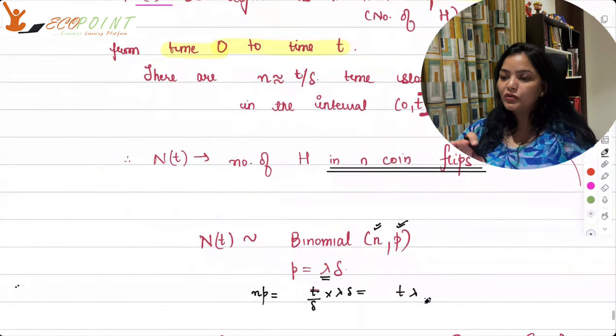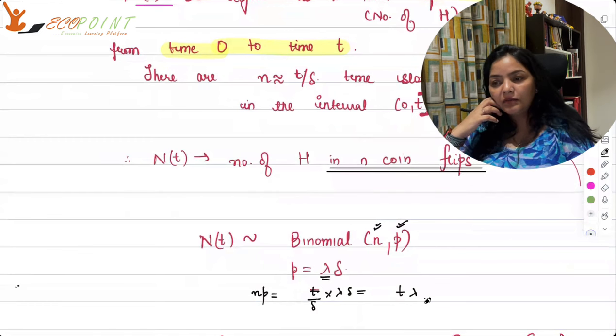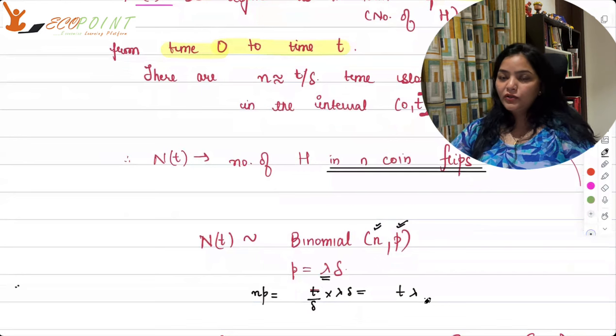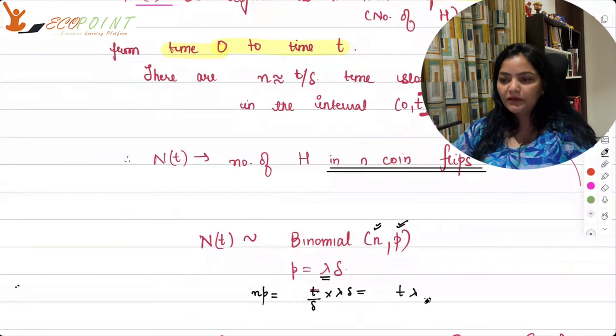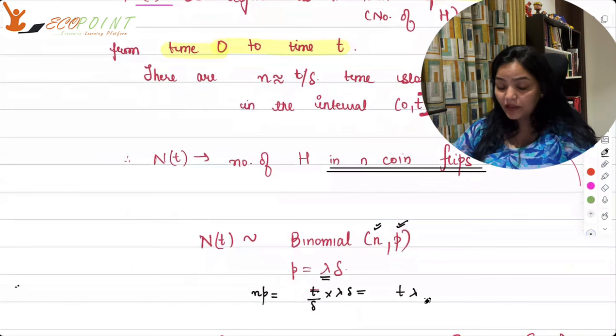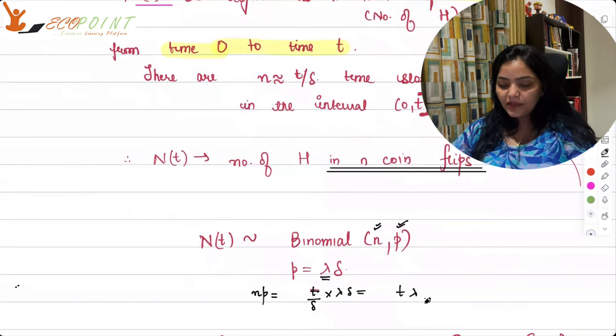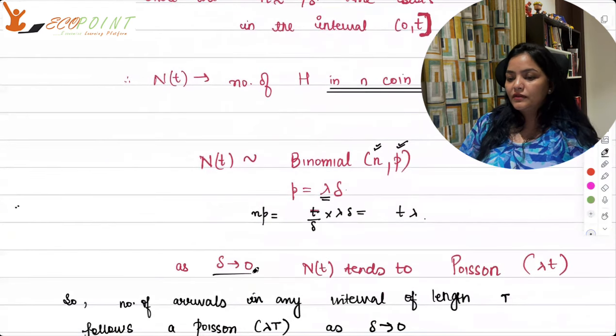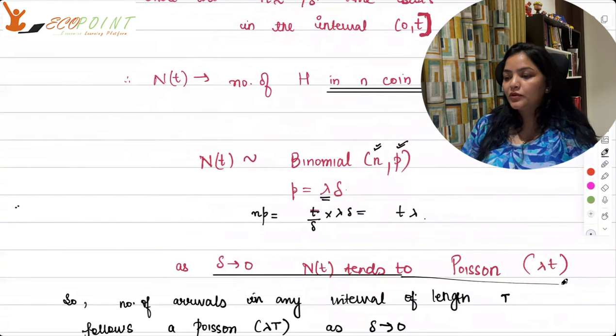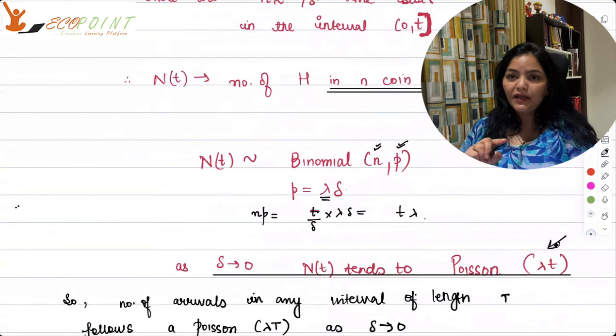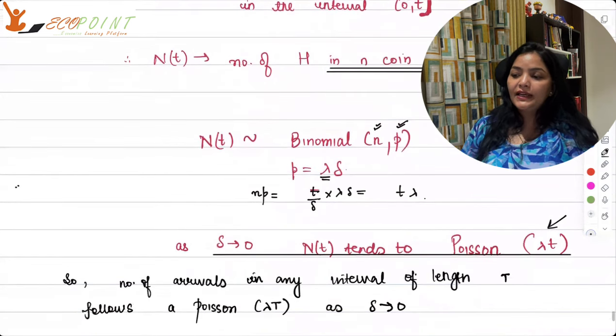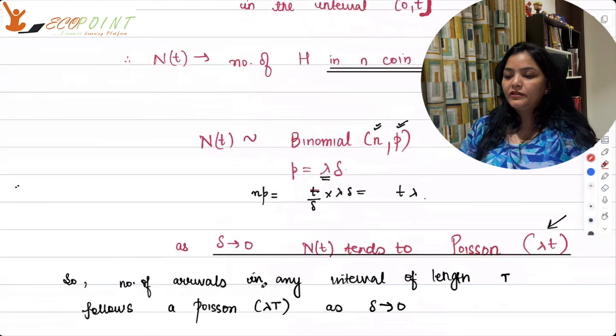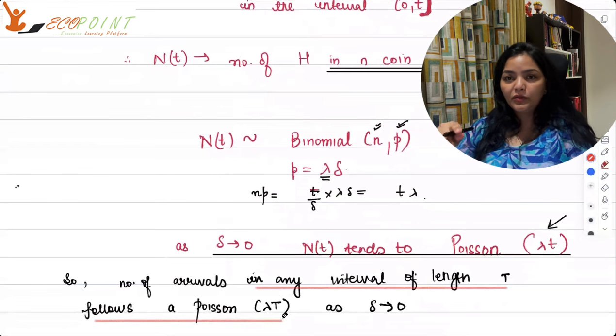So as delta goes to 0, if you see n is too large. We have discussed this before in poison. n is too large. So delta is tending towards 0, n is tending towards infinity. When your delta is tending towards 0, your nt, the number of heads will go towards poison with parameter lambda t. So the number of arrivals in any interval of length tau follows the poison distribution with parameter lambda tau as delta goes to 0.